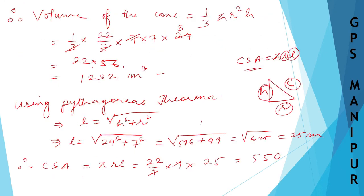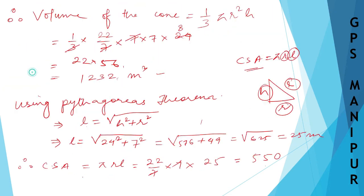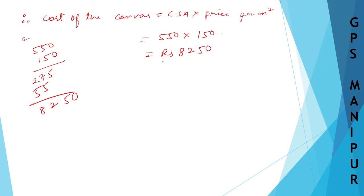The cost of the canvas is given as rupees 150 per square meter. Therefore, cost of canvas = curved surface area × price per square meter = 550 × 150 = 82,500 rupees. So the final answer is rupees 82,500. That's all — I hope the answer is correct. Thank you so much, we will meet in the next video.